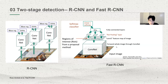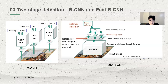So there is Fast RCNN, proposed by the same author. Unlike several convolutions in RCNN, Fast RCNN has only one overall convolution. After passing through the ROI pooling layer, the feature map sizes are equalized and then the fully connected layers can be connected, which greatly improves efficiency.